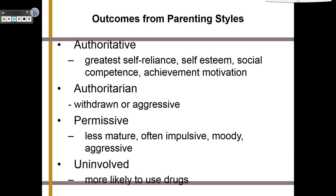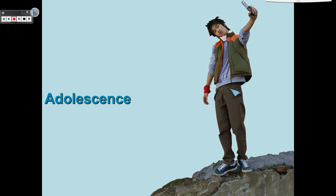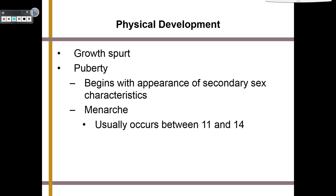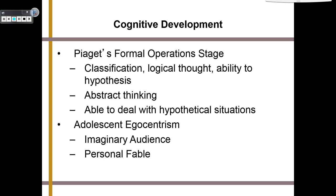So those were all of the major theories that have to do with development. Please make sure you're studying each of these theories — we've talked a lot about how they affect you as a child. Going forward, we're going to be quickly going through adulthood and adolescence, but the same theories will apply. We know physically that as a teenager, you have a growth spurt and interact with puberty, beginning with the appearance of certain secondary sex characteristics. In women, they develop menarche — which usually occurs between 11 and 14 — or your first period. By this time in Piaget's formal operations stage, you've mastered classification, logical thought, and the ability to hypothesize.